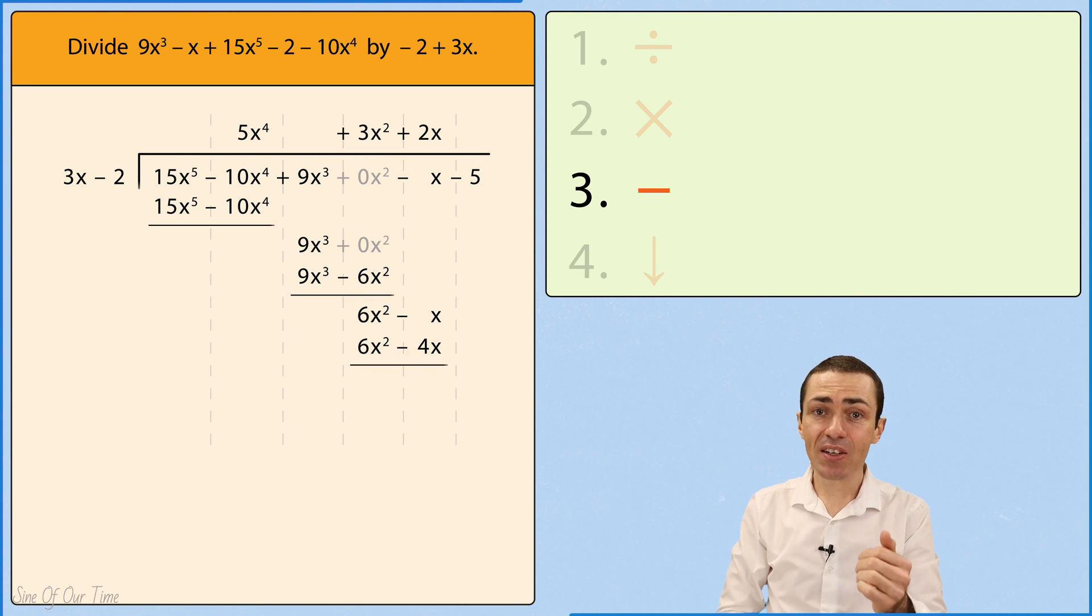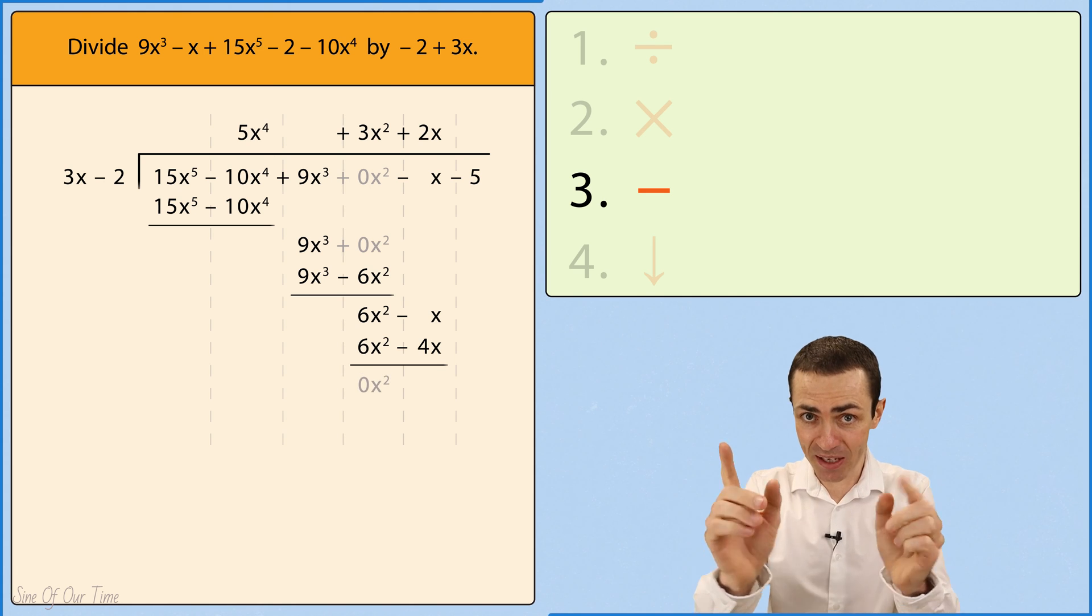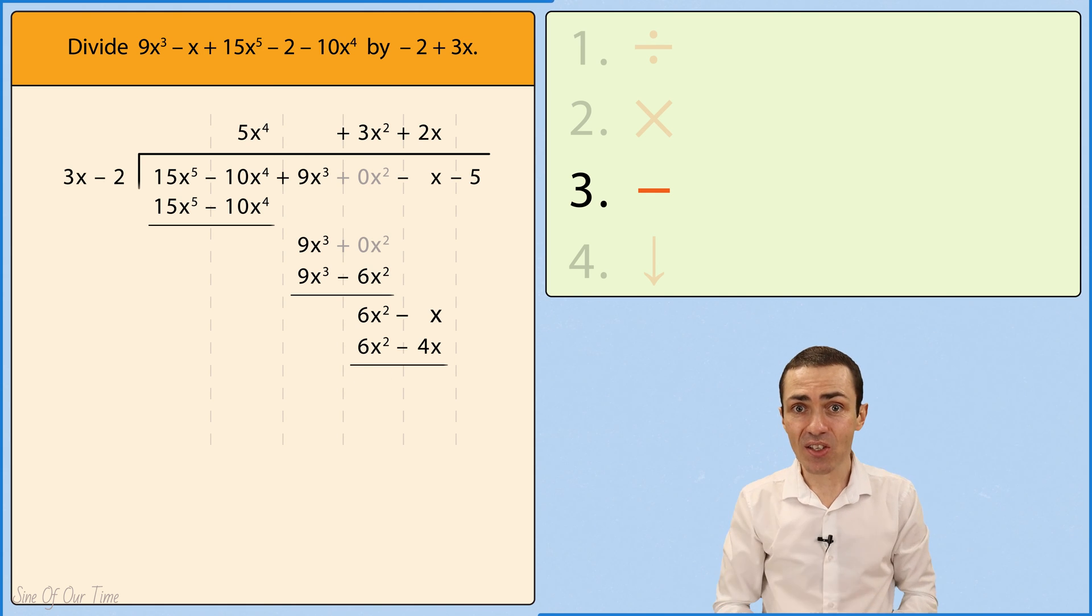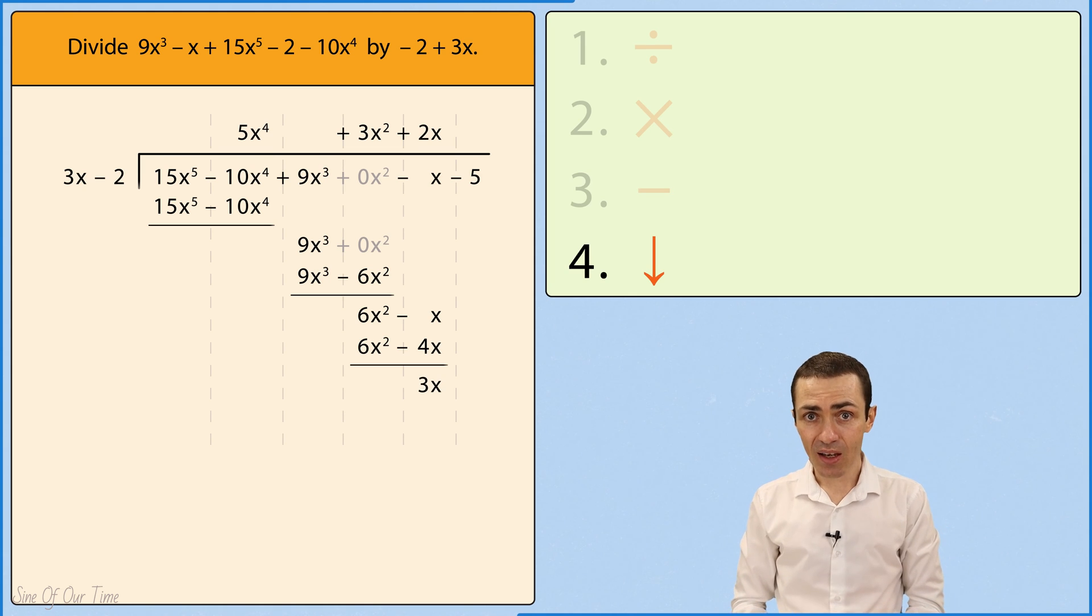And then 6x squared subtract 6x squared gives us 0x squared as expected. And negative x subtract negative 4x gives us positive 3x. And then we simply bring down the negative 5 and we write it alongside the 3x.